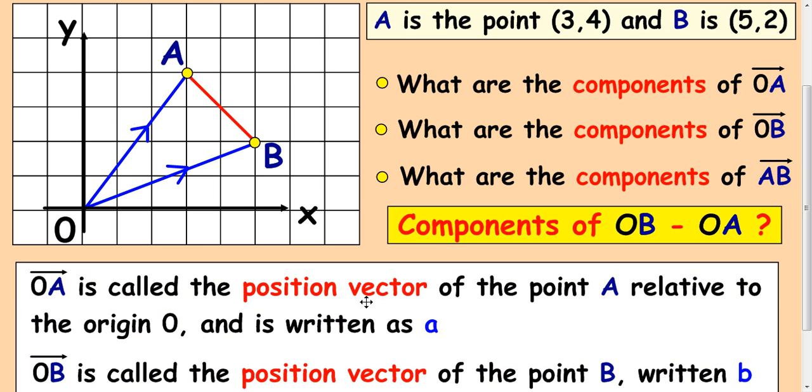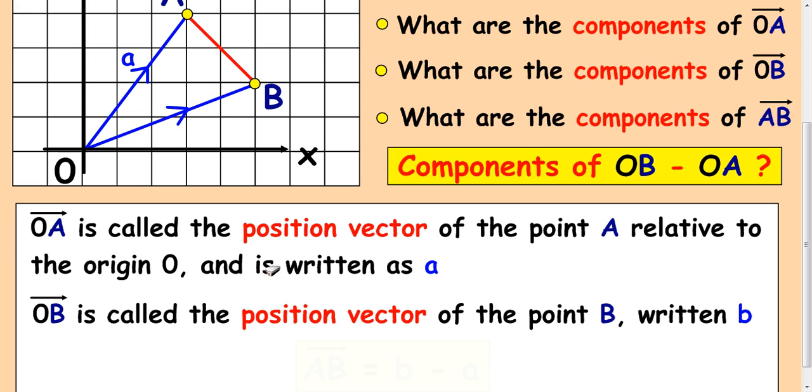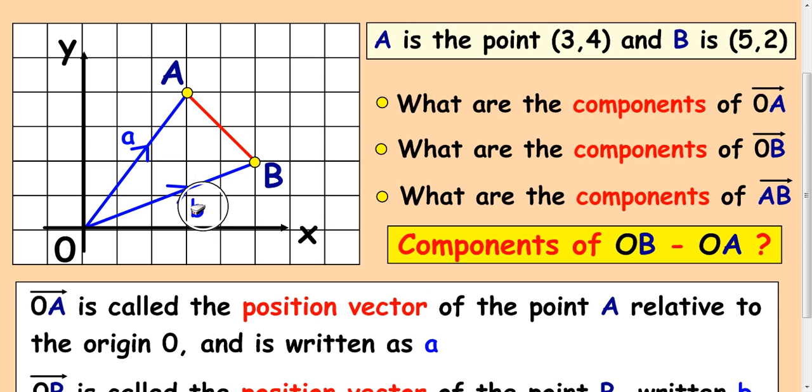So OA is called the position vector of point A, that's relative to the origin, and we write that as a small 'a' in bold or underlined. OB is called the position vector of point B and that's written as small 'b'.